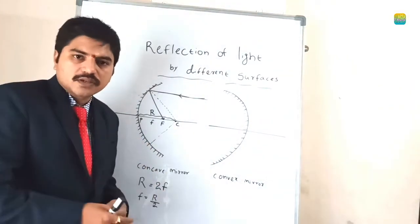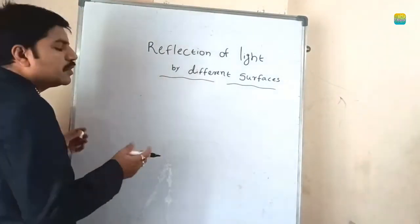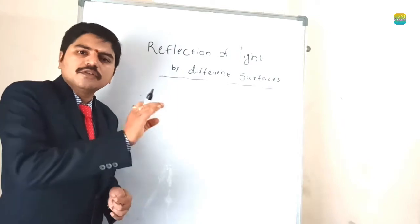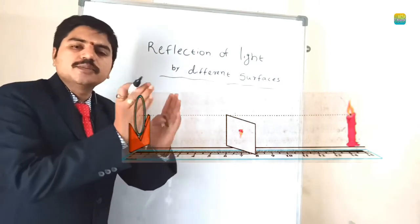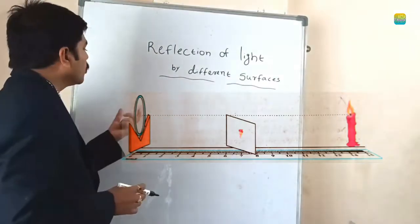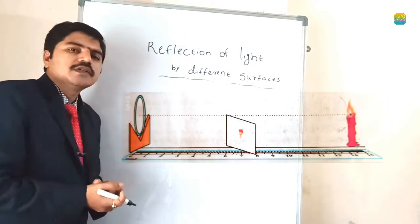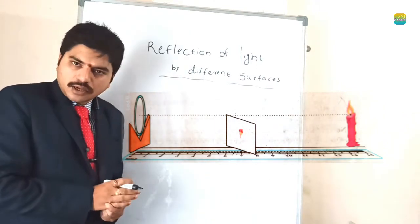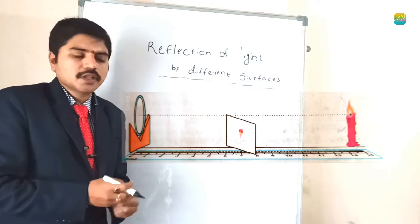We will discuss a lab activity — observing the images. Different types of images will be there: blur images and sharp images. We can easily identify object distance and image distance using this lab activity. For this activity we need a V-stand, one concave mirror, one candle, a matchbox, and a metre scale.